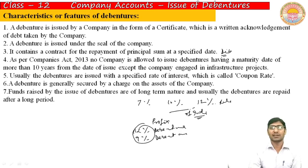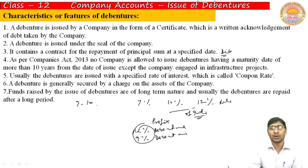Funds raised by the issue of debentures are long-term in nature and are generally repaid after a long period. This payment duration is generally 7 to 10 years, but in special conditions — such as for infrastructure companies — it can be 15 to 20 years.